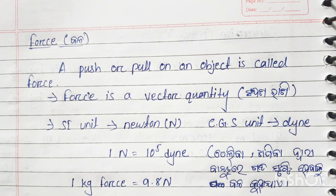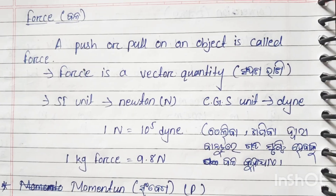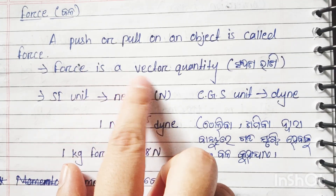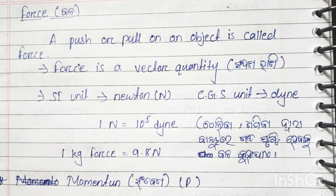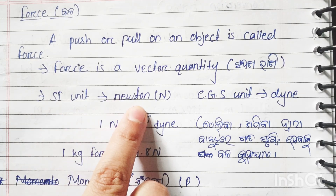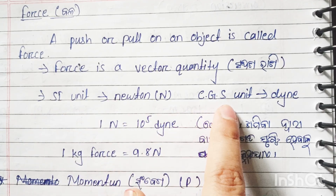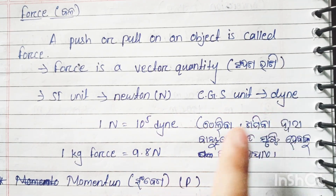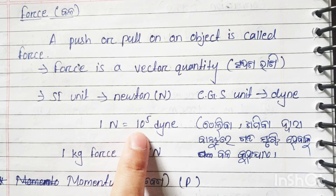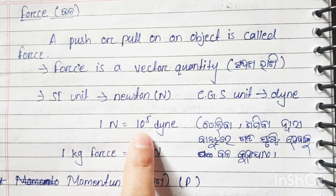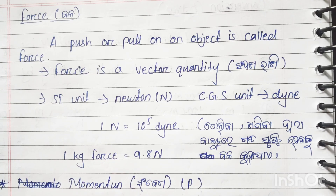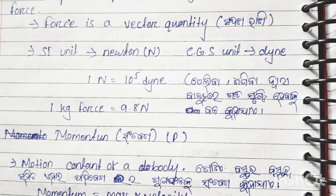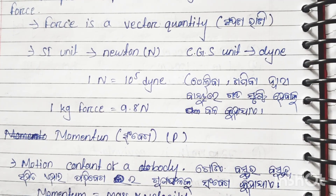Force is a vector quantity. The SI unit of force is Newton, and the CGS unit is Dyne. 1 Newton is equal to 10 to the power 5 Dyne, and 1 kilogram-force is equal to 9.8 Newtons.